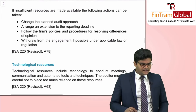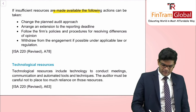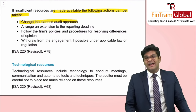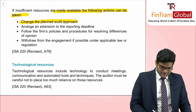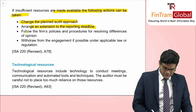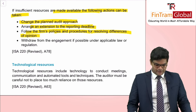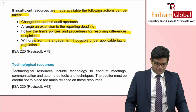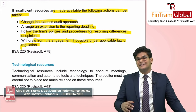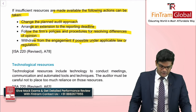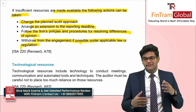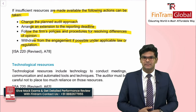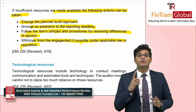If insufficient resources are available, the following actions can be taken: change the planned audit approach; arrange an extension to the reporting deadline; follow the firm's policies and procedures for resolving differences of opinion; or withdraw from the engagement if possible under applicable law or regulation. So we could change our plan, try to extend the deadline, negotiate with management following firm procedures, or if nothing is possible, consider withdrawing from the engagement.